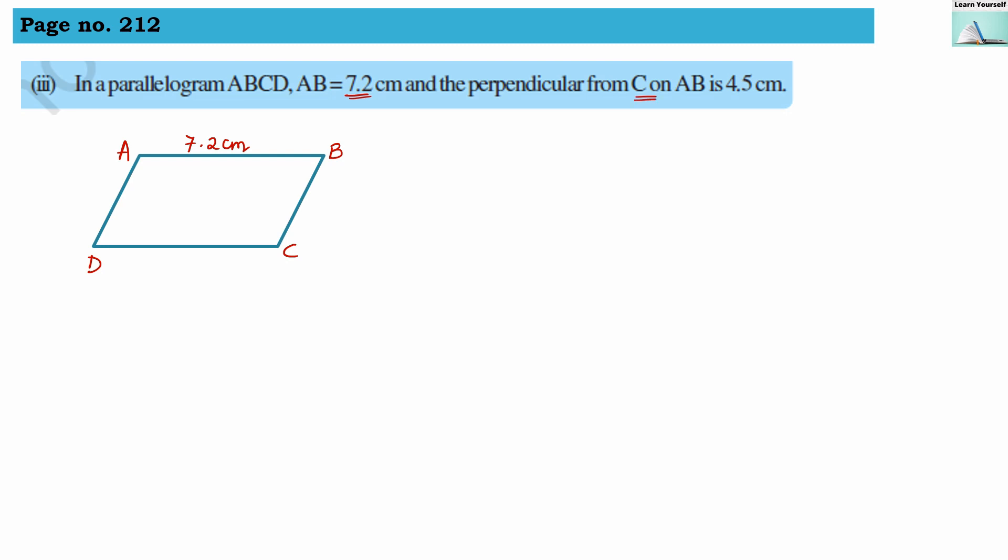From C we have to make one perpendicular and that will be on AB. To AB this perpendicular will be there and that is 4.5 centimeter. So this length is 4.5 centimeter.